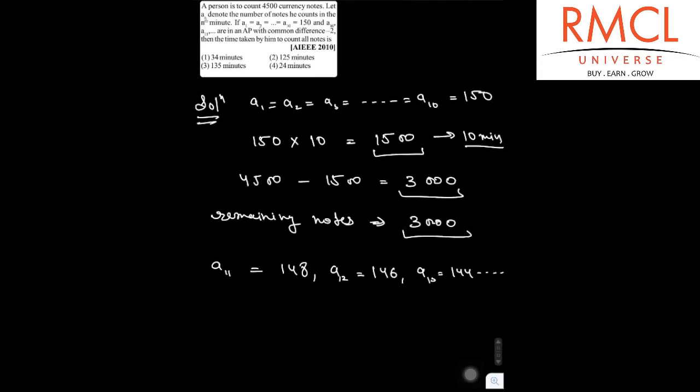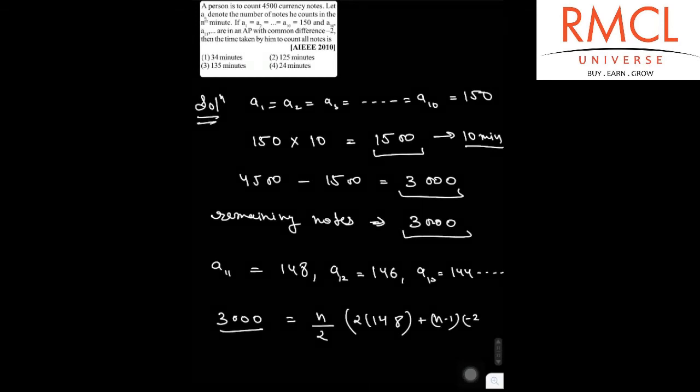So suppose the sum is 3000. If the sum is 3000 and time taken is N, then this is N by 2 multiply by twice the first term, that is 2 into 148 plus N minus 1 multiply by minus 2.